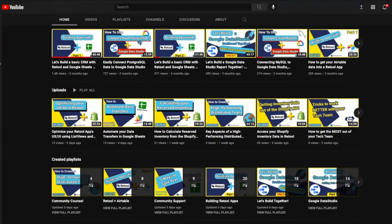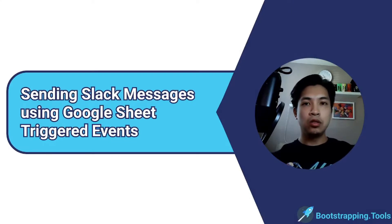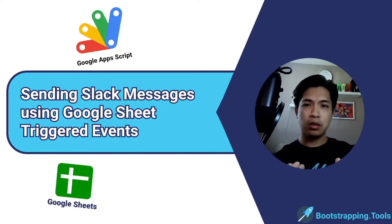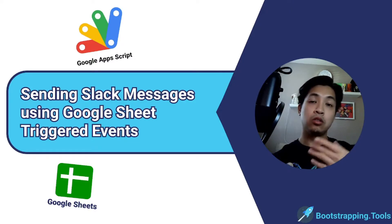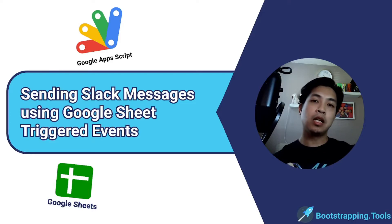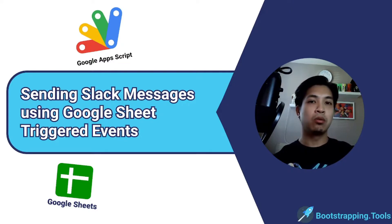In today's video, we're going to go over how you can send a Slack message using a triggered event through Google Sheets, which is also going to use Google Apps Script. If you're using task management in Google Sheets or managing your operations there, we're going to use Google Apps Script trigger events to watch a specific field, and when you update it, it will trigger a message sent over to Slack to notify your team that a change has occurred. Slack is where the majority of people are nowadays, so this should be really helpful.